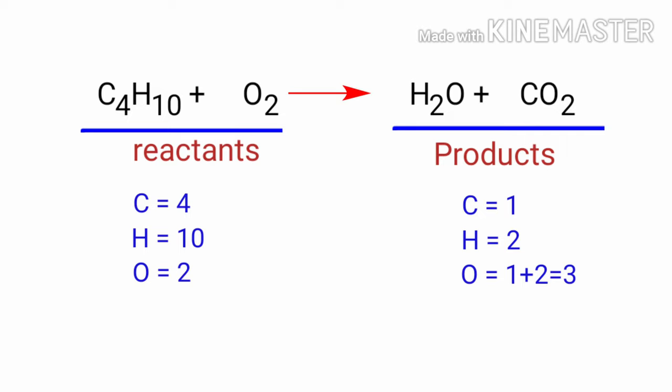In this equation, we need to balance the carbon atoms first. To do this, we need to put a coefficient of 4 in front of CO2. The carbon atoms are balanced.